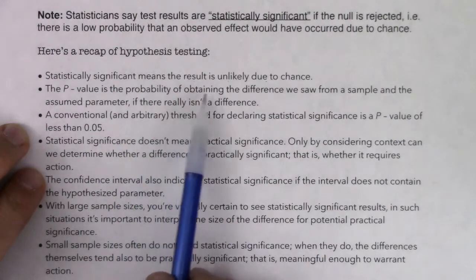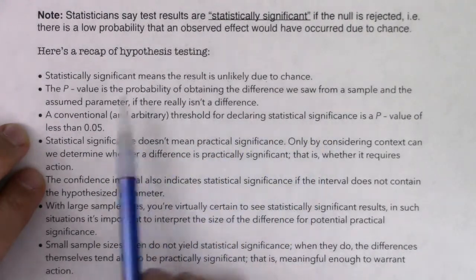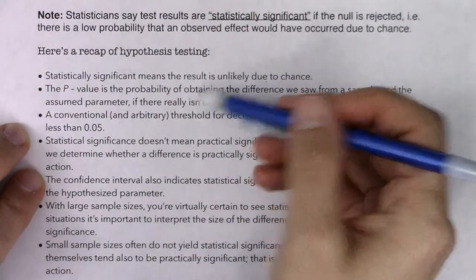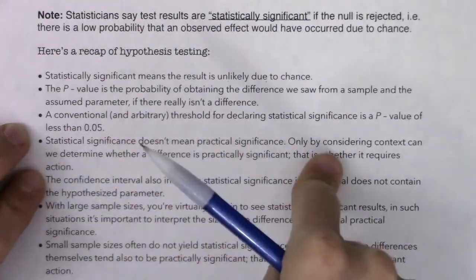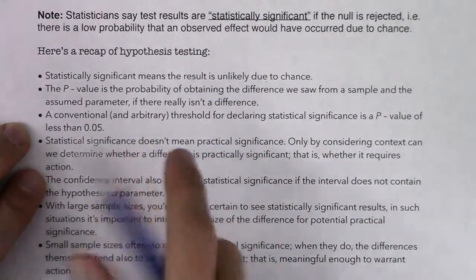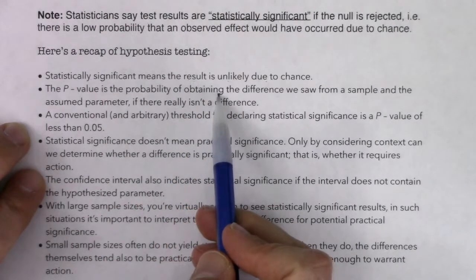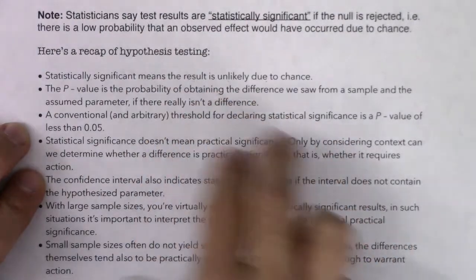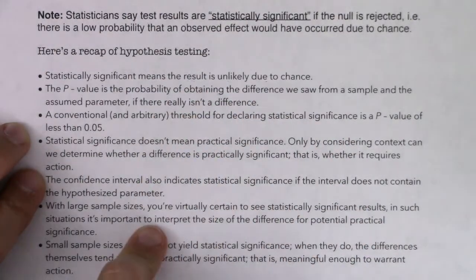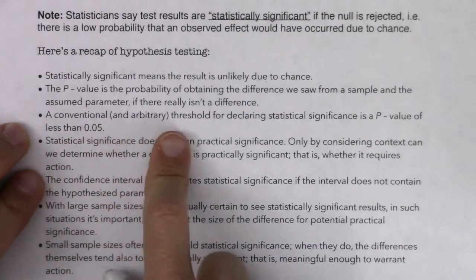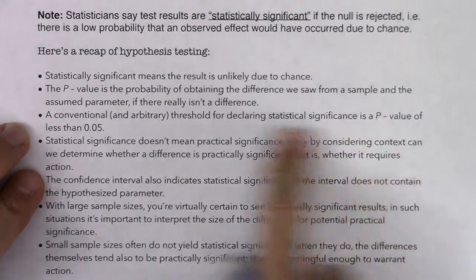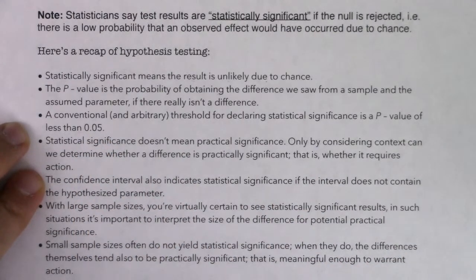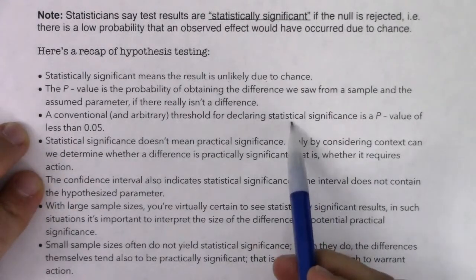The p-value is the probability of obtaining the difference you saw — between your sample statistic and the parameter — if there really isn't a difference. The p-value puts a number to what's the probability that difference was due to chance. A conventional and arbitrary threshold for declaring statistical significance is a p-value less than 0.05. So we reject the null if your p-value is less than five percent — and when you reject the null, we say things are statistically significant.